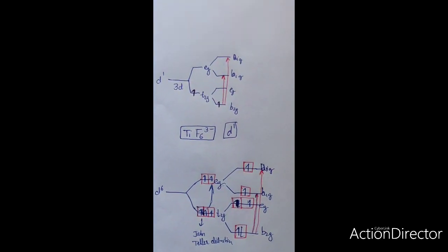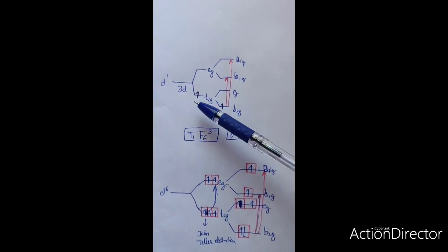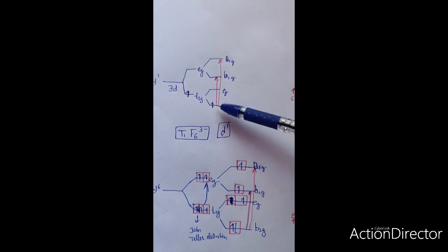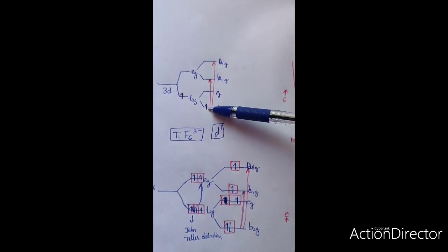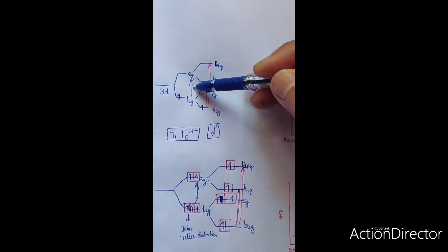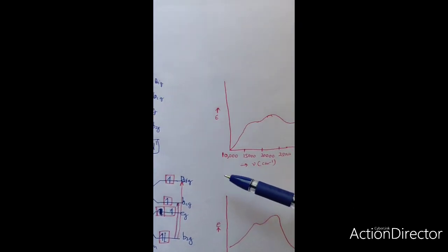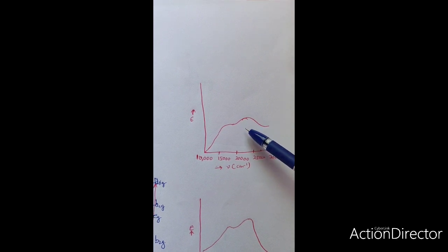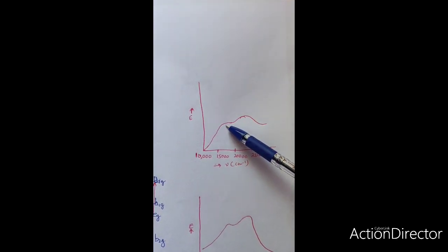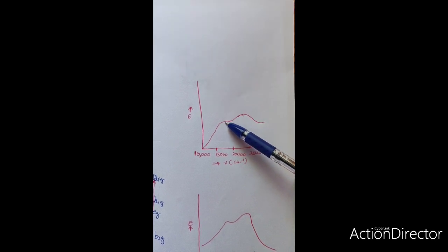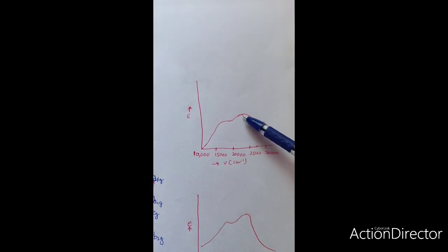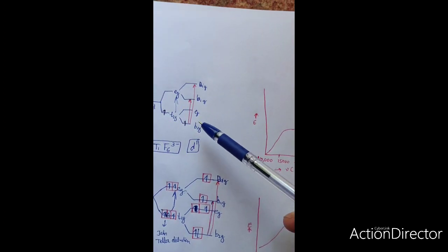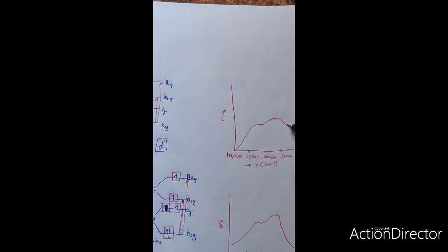We can see another example in D1 configuration. Due to asymmetric filling of the T2g set, it again lowers its symmetry and there are two types of transitions. Instead of getting only one peak, there are broad peaks — a broad peak with a shoulder at 17,400 cm⁻¹ in addition to a peak at 20,300 cm⁻¹. This shoulder is due to Jahn-Teller distortion, which increases the width of the peak.